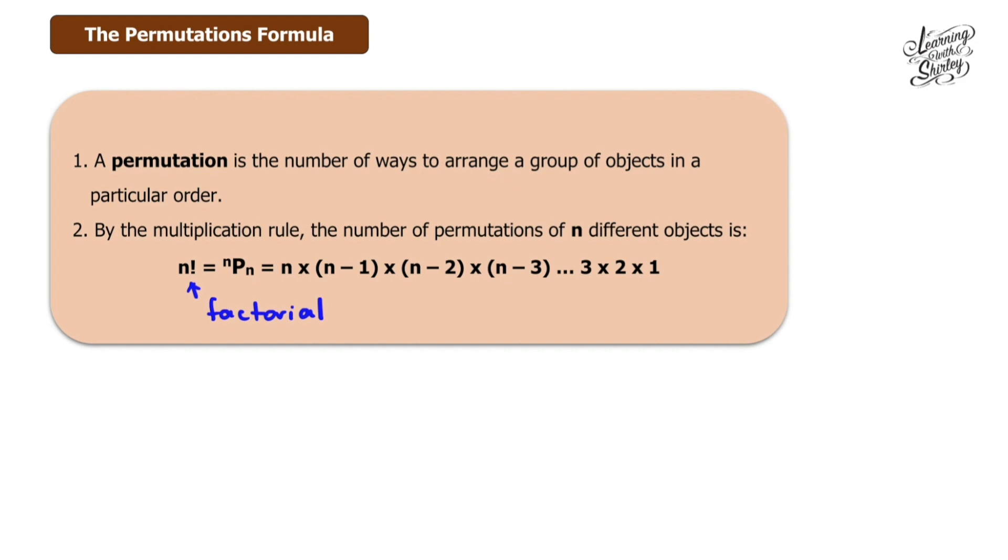For example, what is 6 factorial? 6! means 6P6, which equals 6 × 5 × 4 × 3 × 2 × 1. Multiplying them together, we get 720.